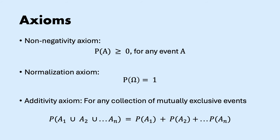A small parenthesis: if you are dealing with probabilities, be aware of the following axioms. Non-negativity states that the probability of any event has to be a positive number. The normalization axiom says that the probability of the sample space is 1. And the additive axiom says that for any collection of mutually exclusive events that do not share elements, the probability of their union equals the sum of the individual probabilities.